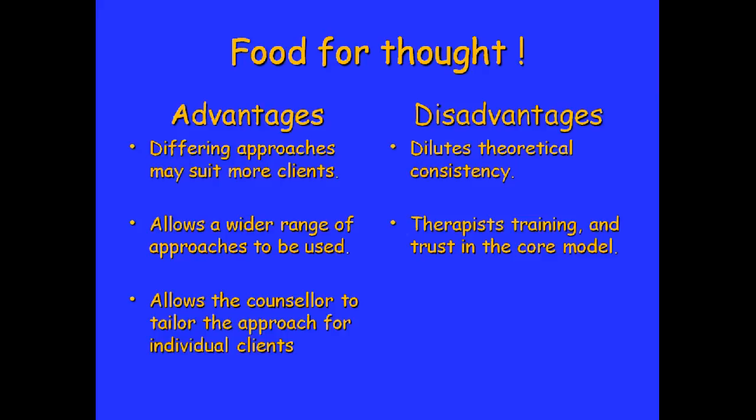Another disadvantage concerns therapist training and trust in the core model. The courses I train take three years to train counsellors to diploma level so they can call themselves a qualified counsellor — and that's quite a short space of time. I always say to my students: this is the beginning of your practice journey; from now on you'll be developing your core model and getting more and more used to working within it. If you then start to add another model, are you going to take three years to train in that too? Most are done quite quickly — you can get a certificate or diploma in another modality, but how much do you really know about your core modality before you start training in another?